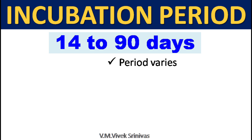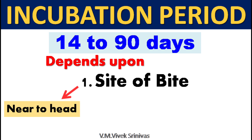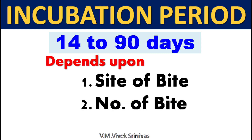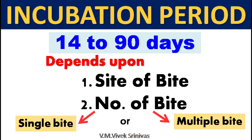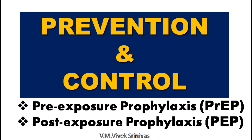Incubation period. The incubation is about 14 to 90 days or more. The period varies and depends upon: (1) site of rabid dog bite — whether the bite is near to the head or far from the head, whether the bite is at extremities like fingers where nerve endings are abundant; (2) number of bites — whether it is single or multiple rabid dog bites; (3) the amount of virus inoculated during bite — more the viral load, shorter the incubation period.